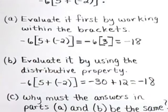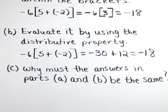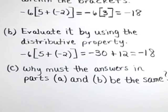Lastly, in part C, why must the answers in parts A and B be the same? Well, that's because for all real numbers, the distributive property will yield the same result as the order of operations does. Thank you.